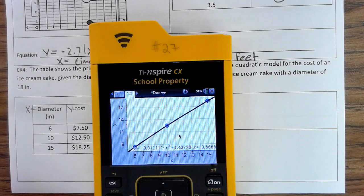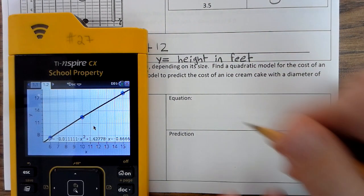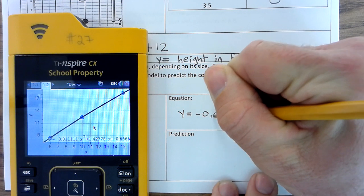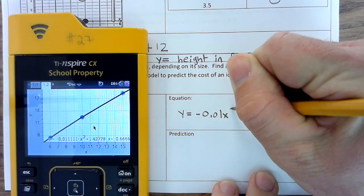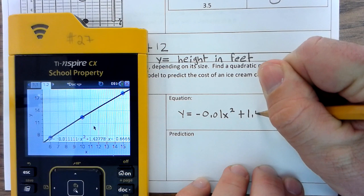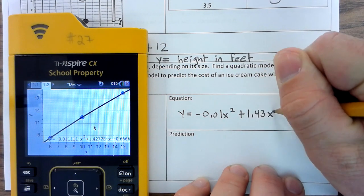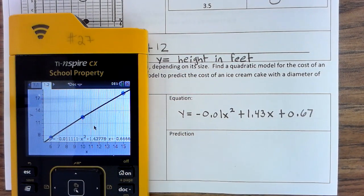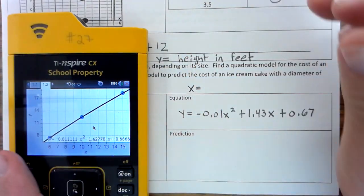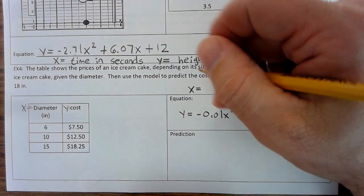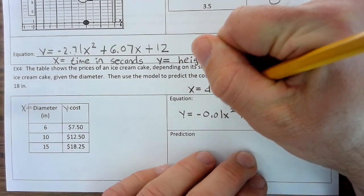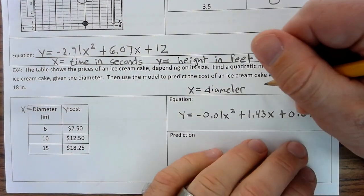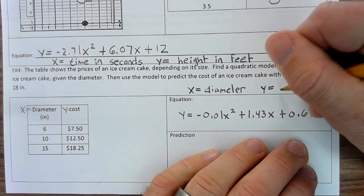Move that away. So, we can see that our equation is, we're going to use two decimal places. Y equals negative 0.01X squared plus 1.43X plus 0.67. Where X is the diameter in inches. And then Y is cost.